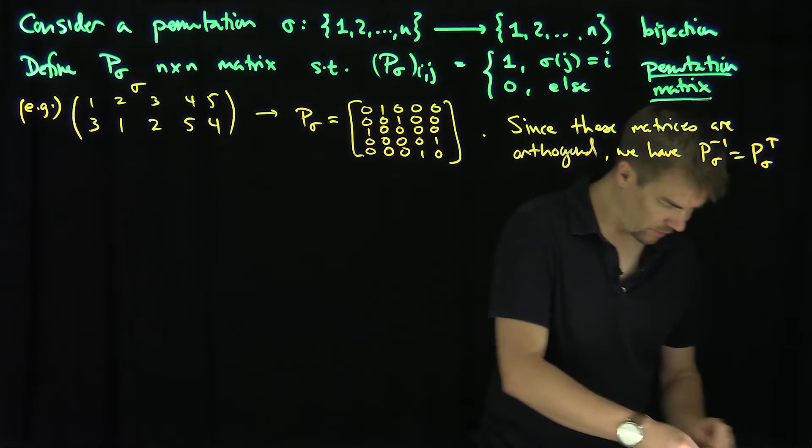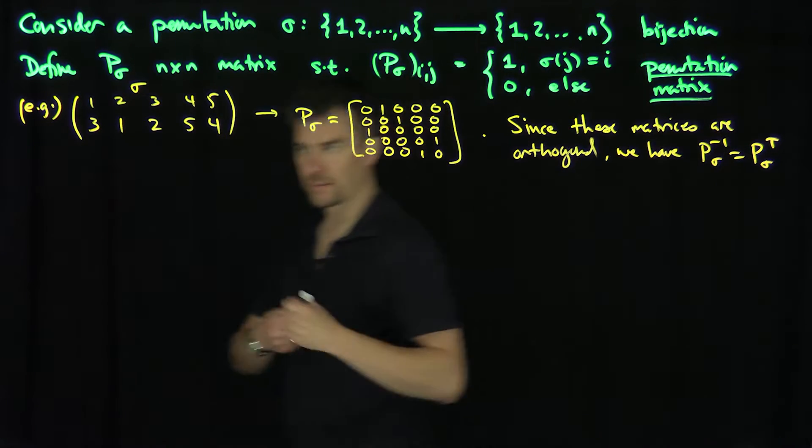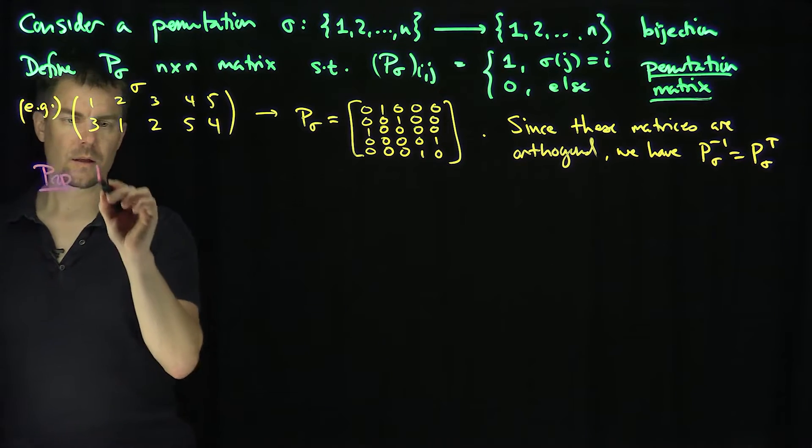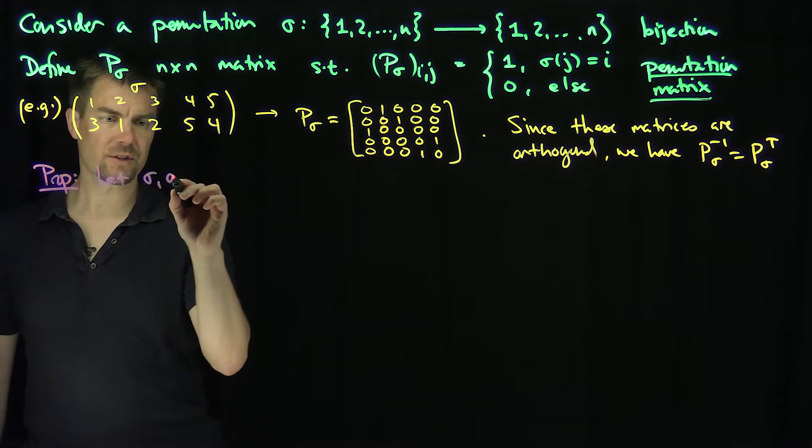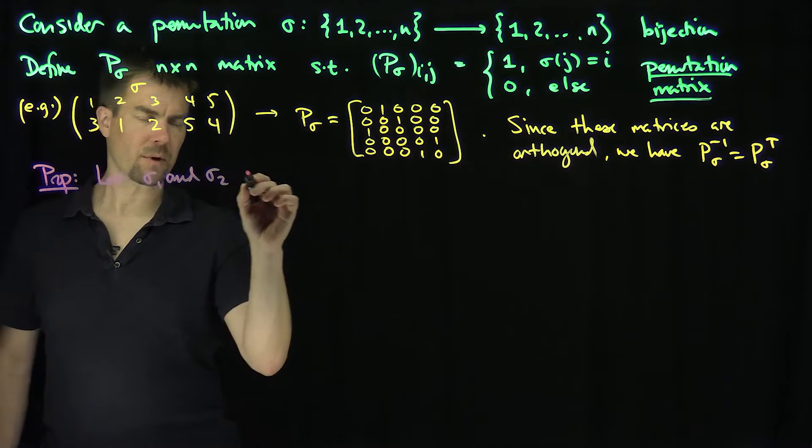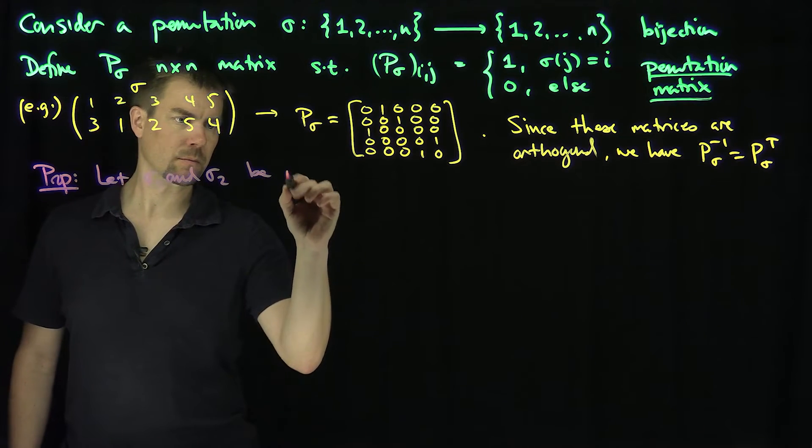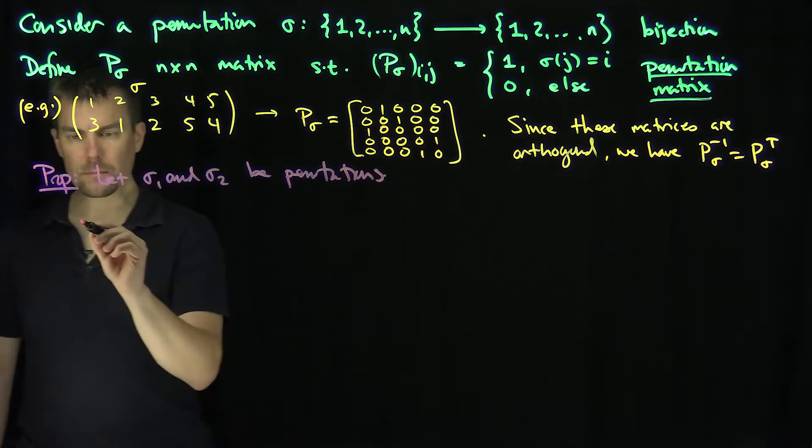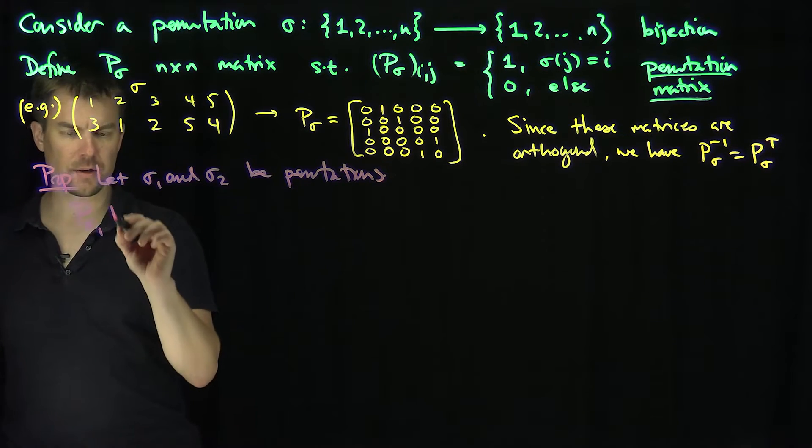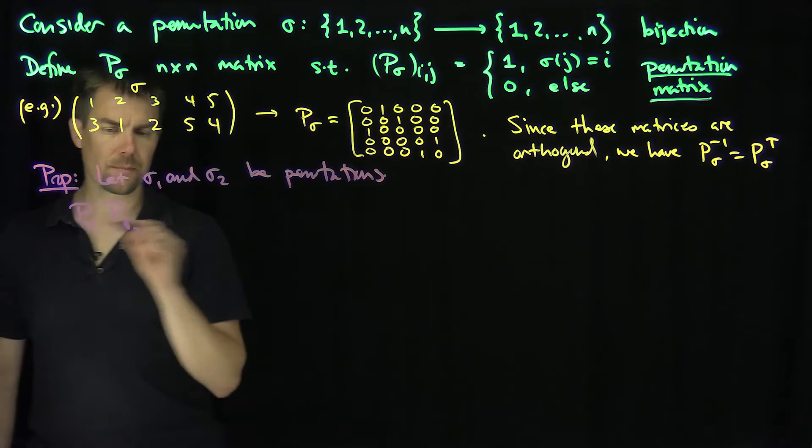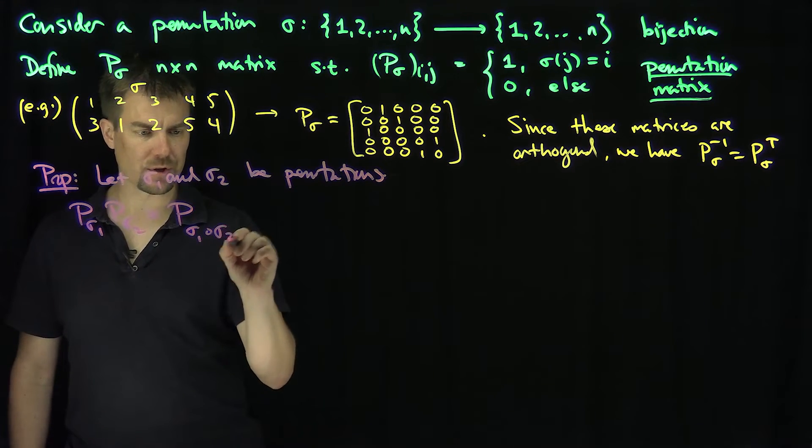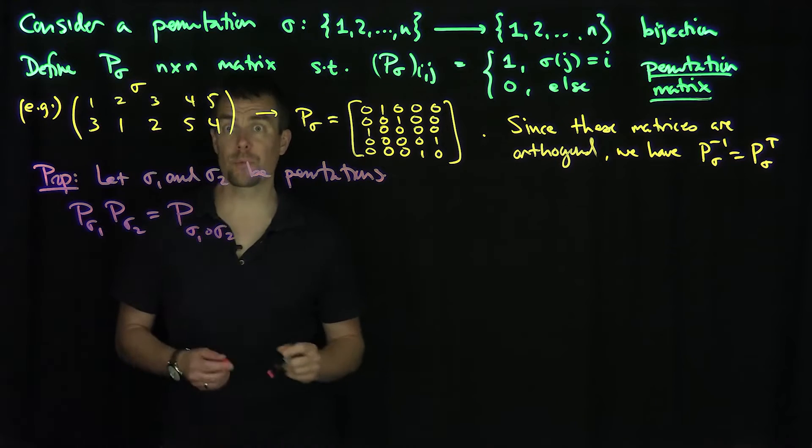Now there's another proposition we're going to prove. So let's prove the first proposition of these things. Proposition 1. Let sigma_1 and sigma_2 be permutations. Then if I multiply P_sigma_1, P_sigma_2, that's going to correspond to P sub sigma_1 composition sigma_2.